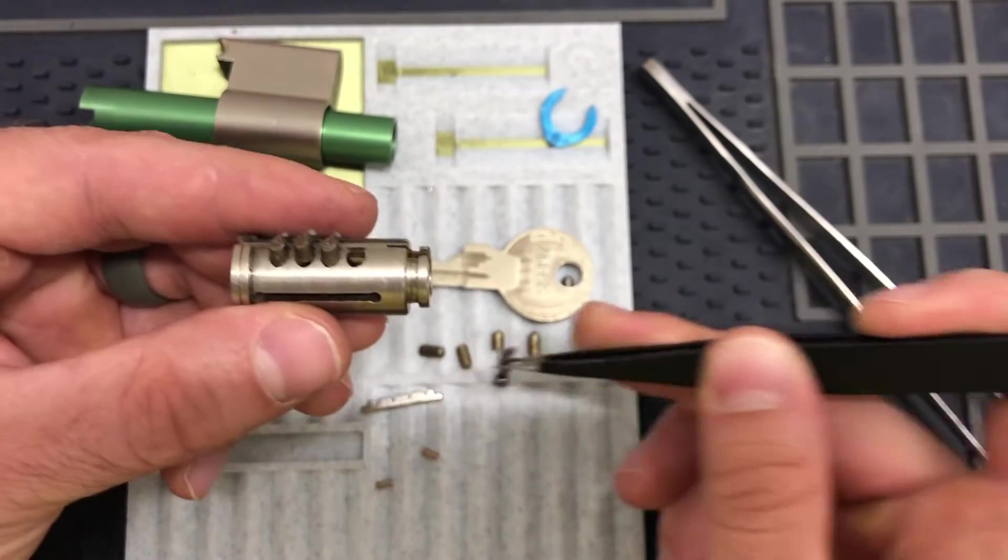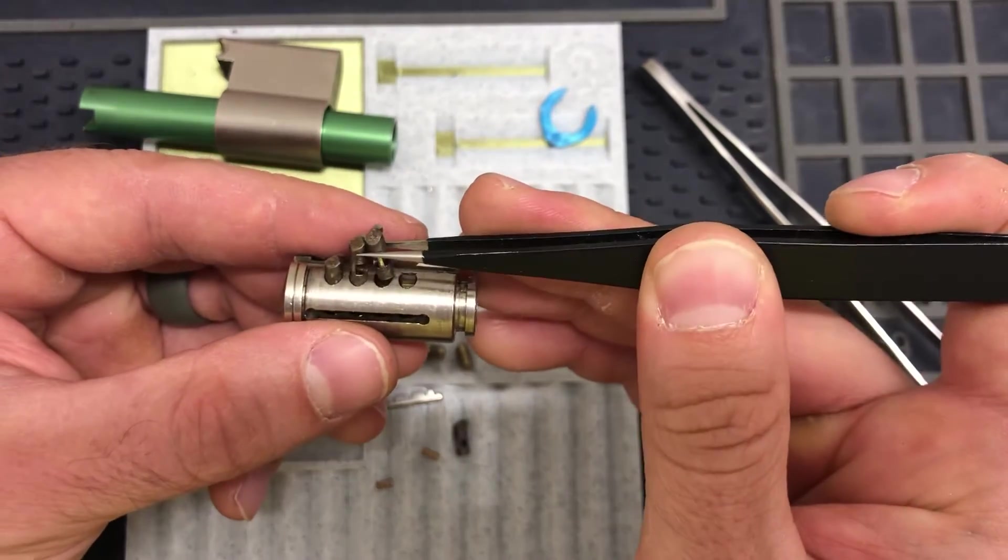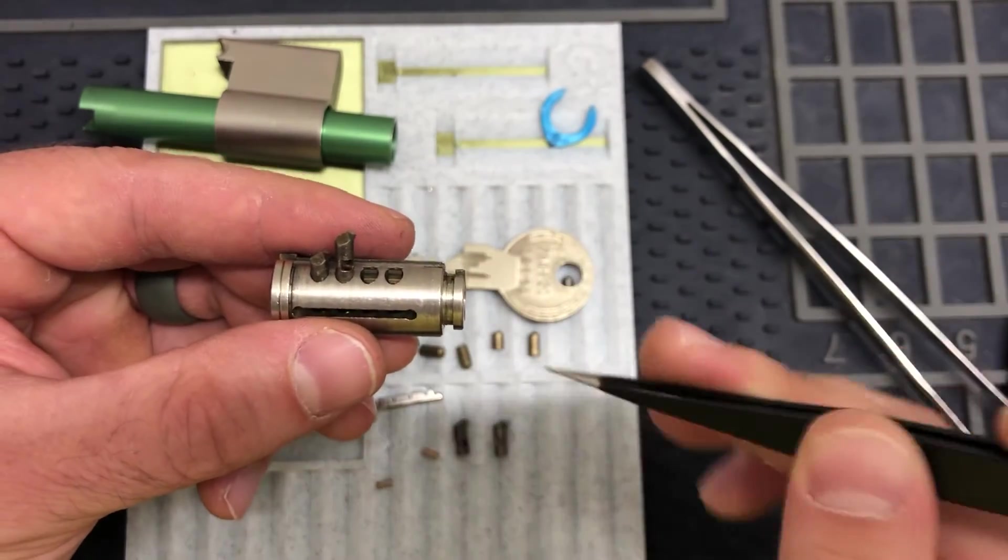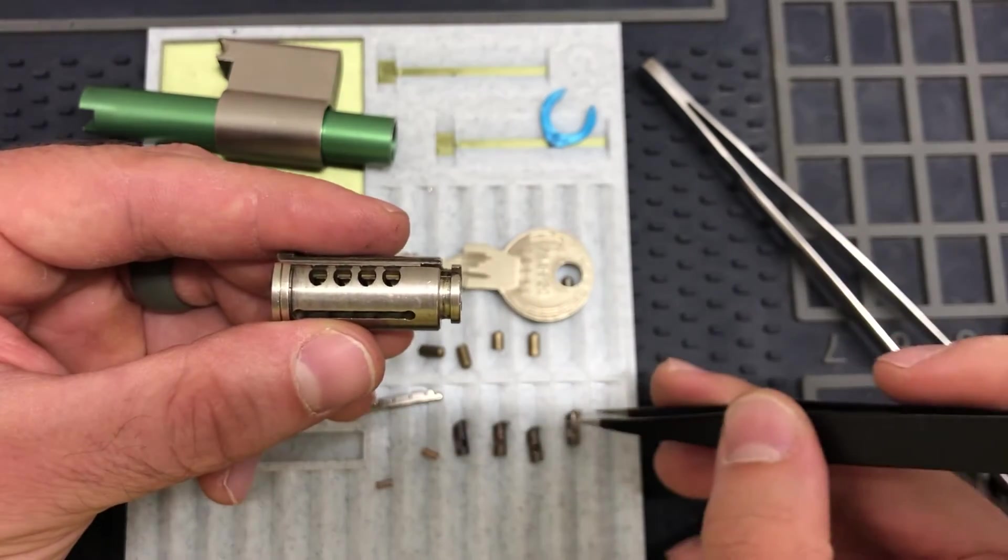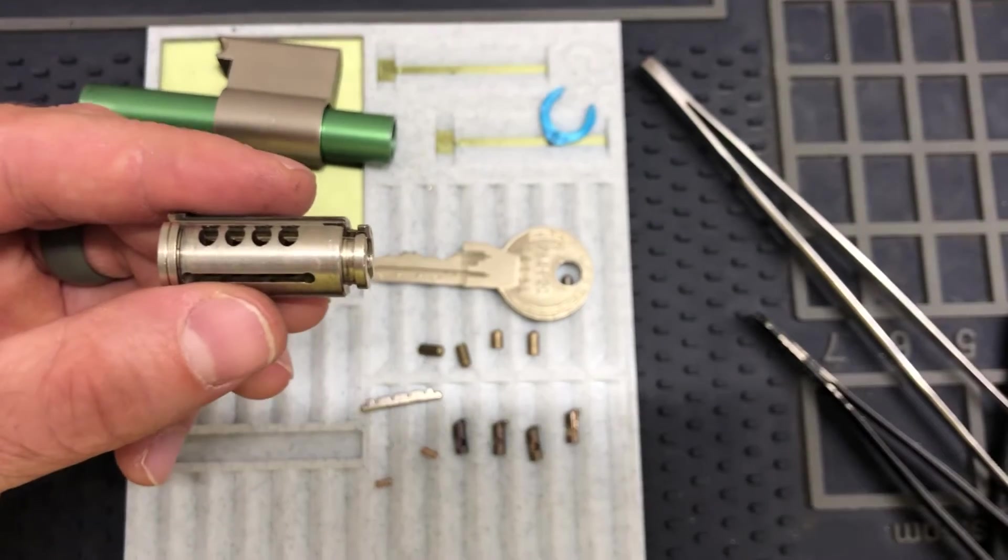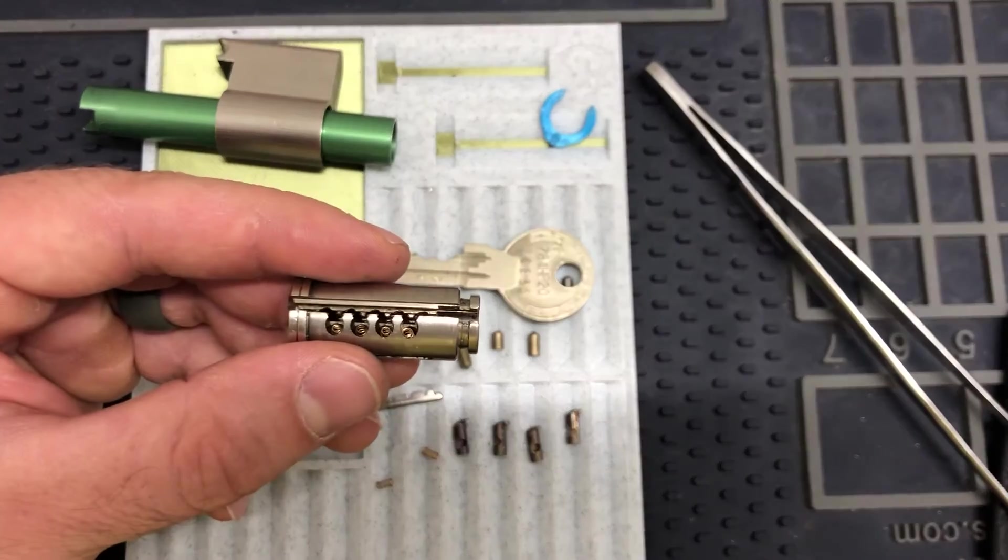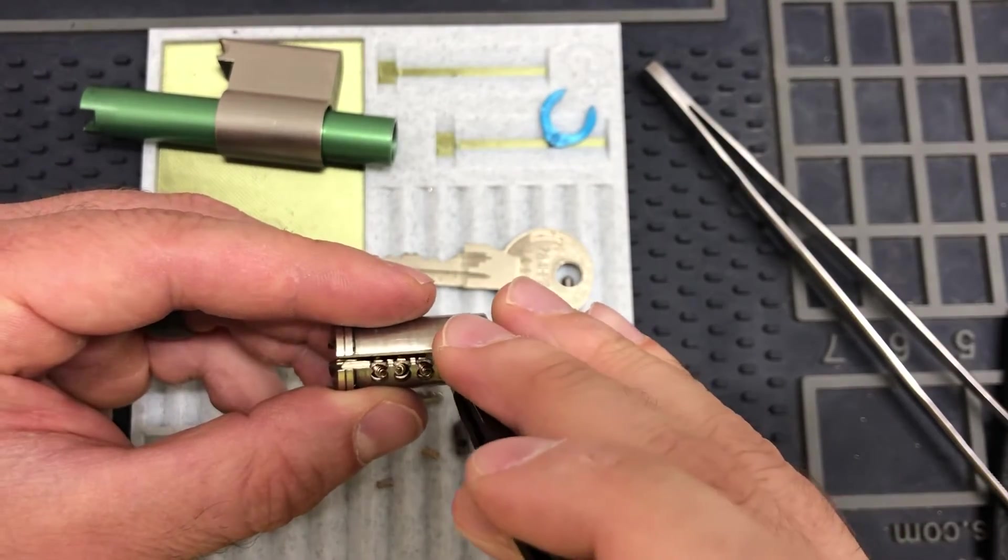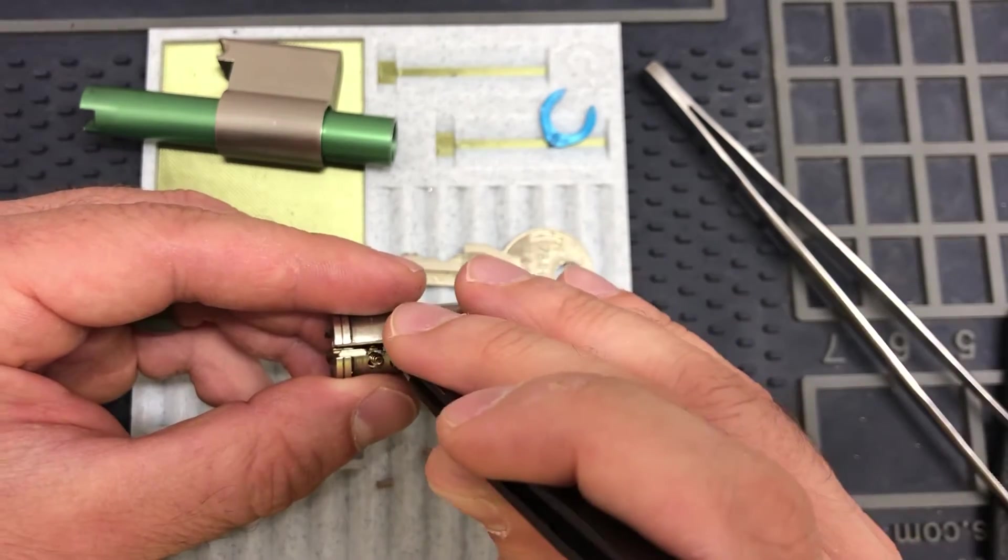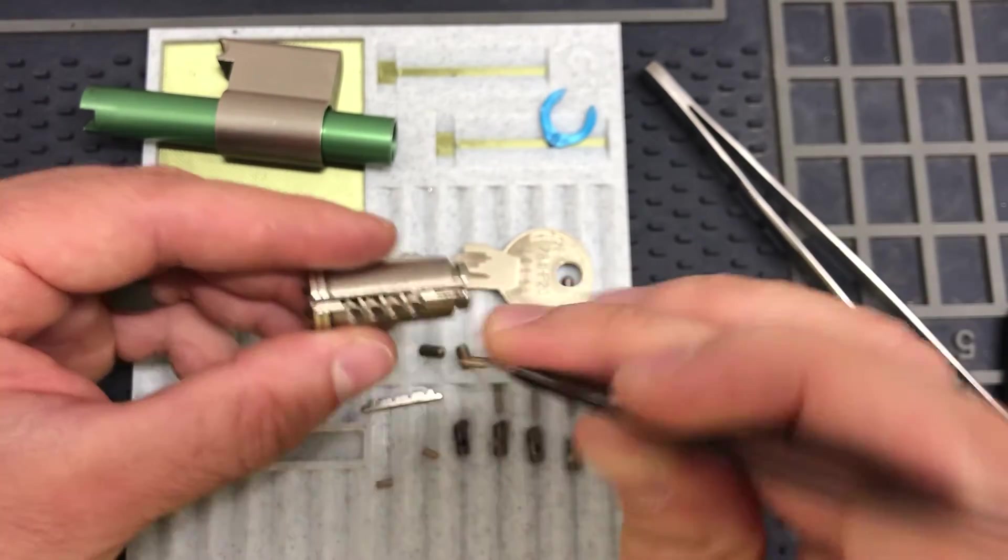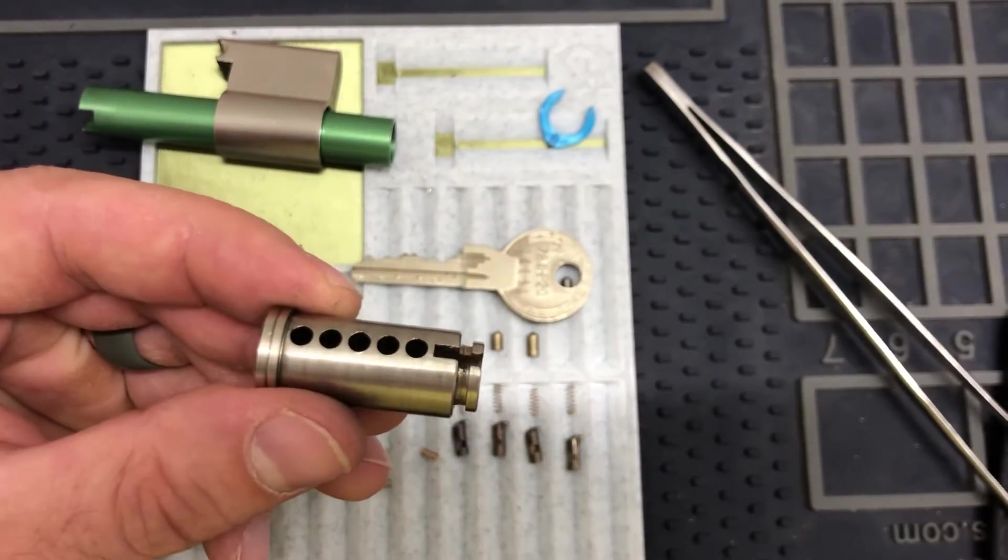So it's number four, three, two, and one. Get those springs out. No millings.